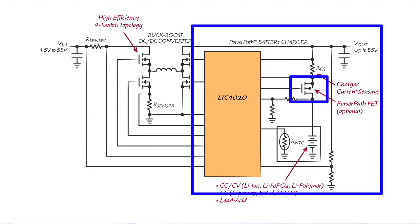An optional power pass FET can be used to disconnect the battery from the system when it is fully charged or during fault conditions. It also allows for instant-on operation with a heavily discharged battery.